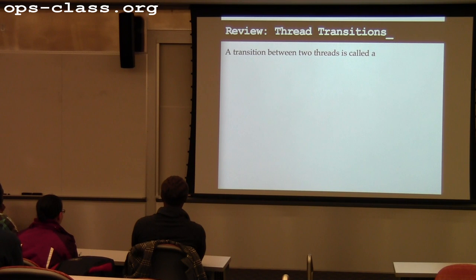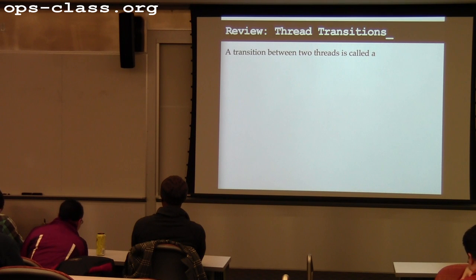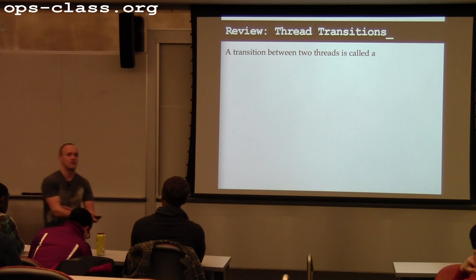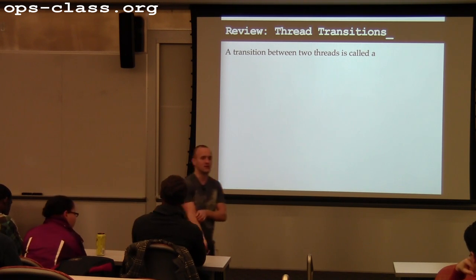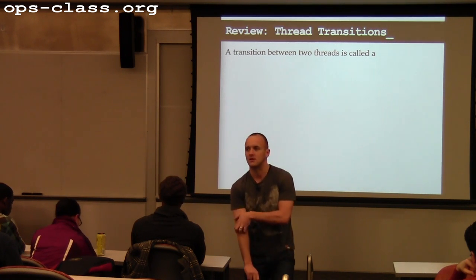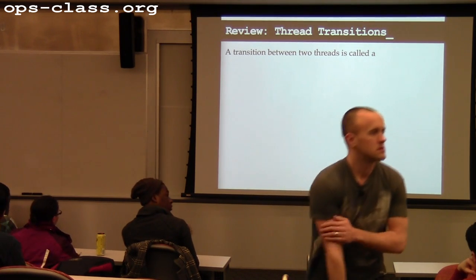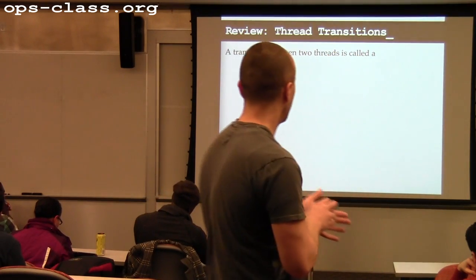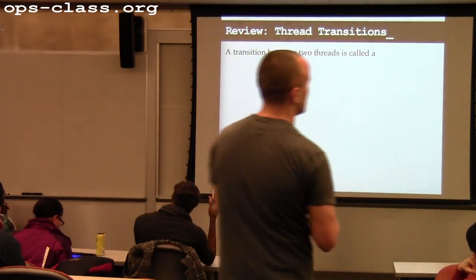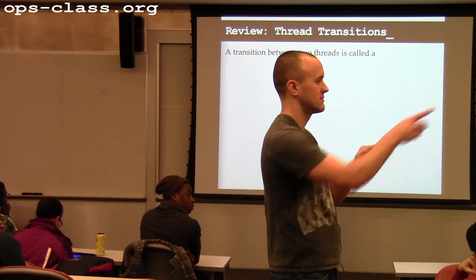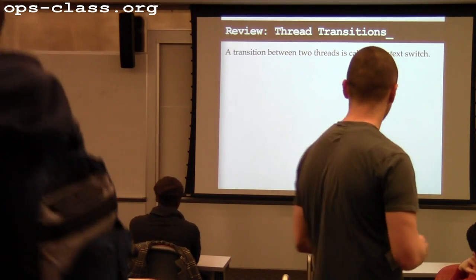Let's review. Any questions about the material we covered Monday and Friday? Monday, we talked about context switching — we gave a historical overview of CPU limitations and how operating systems have tried to address those. So when I transition between two threads, what do I call that? A context switch.